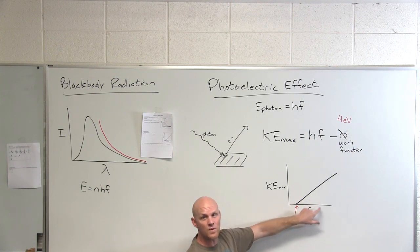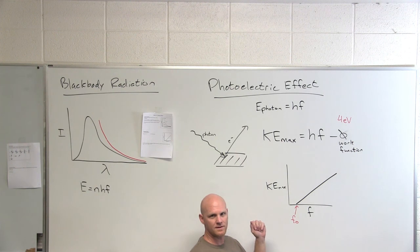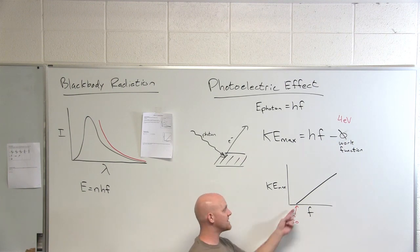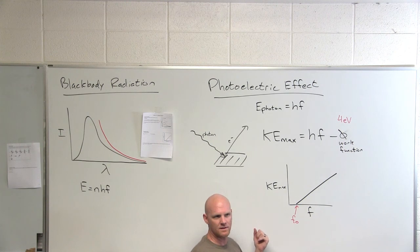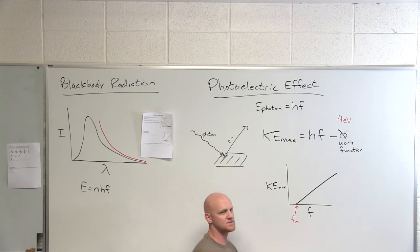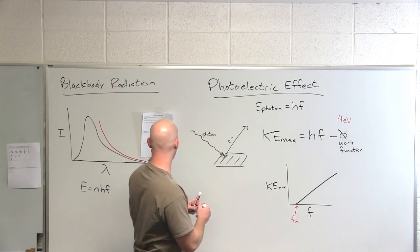You could also graph this as a function of wavelength. How are frequency and wavelength related? Yeah, they're inversely proportional. So think about how that might change the graph. Instead of having a minimum frequency, what would we have in terms of wavelength? We'd have a maximum wavelength at which electrons can be ejected instead of a minimum frequency. So keep in mind, opposite relationship with wavelengths.